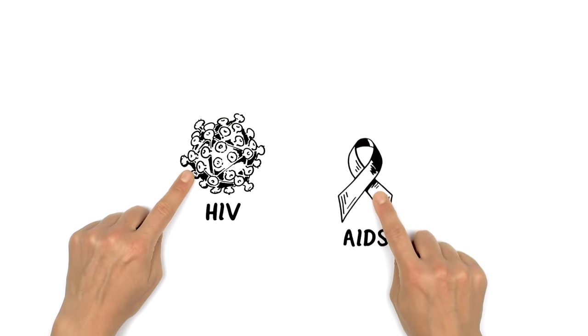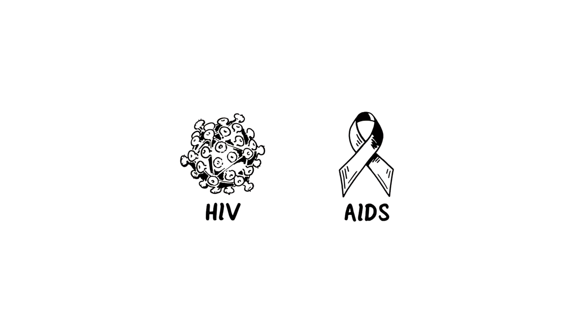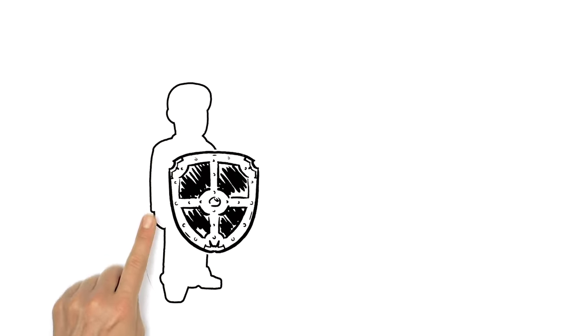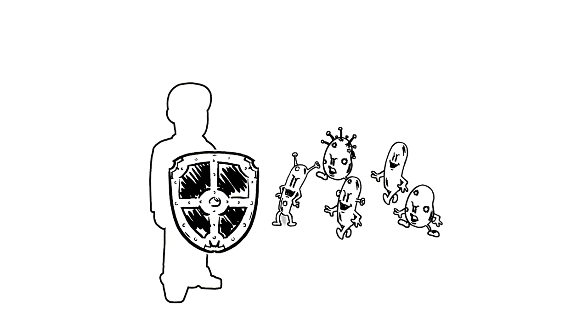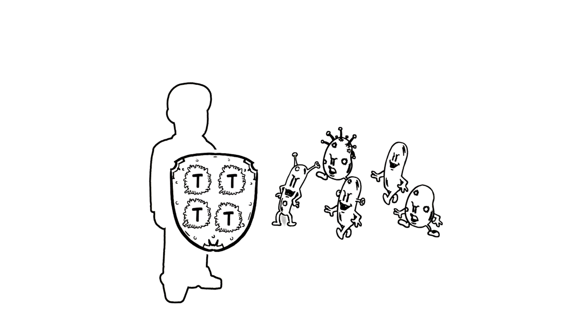We explain HIV and AIDS. The human immune system defends the body against illnesses all the time. It uses guards in the blood called T-cells to recognize any intruders and destroy them.